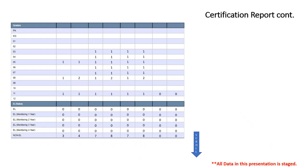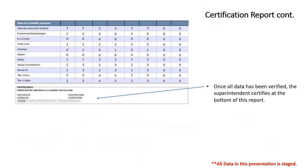At the bottom are your other accountability indicators — verify that those look good. Then your superintendent will be able to certify at the bottom. So once everything has been verified, have your superintendent come in and click the certify and submit to DOE button.